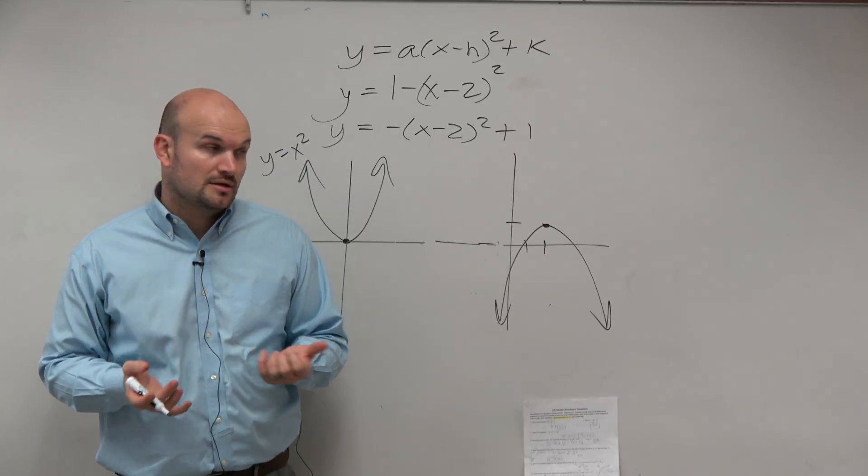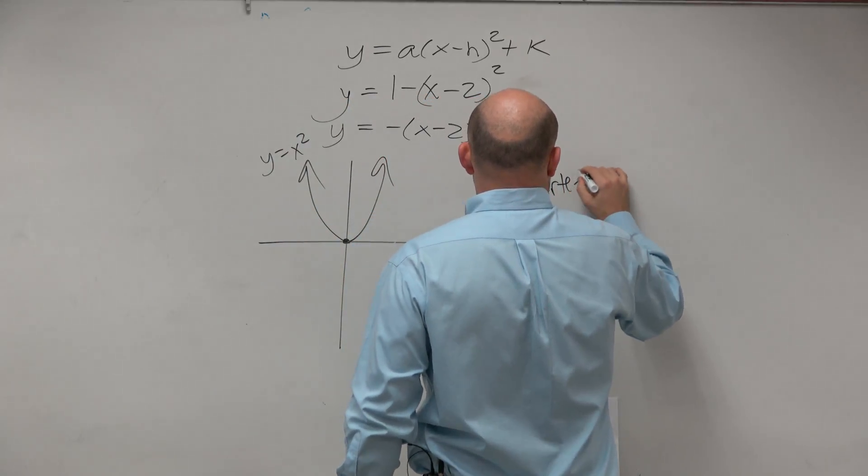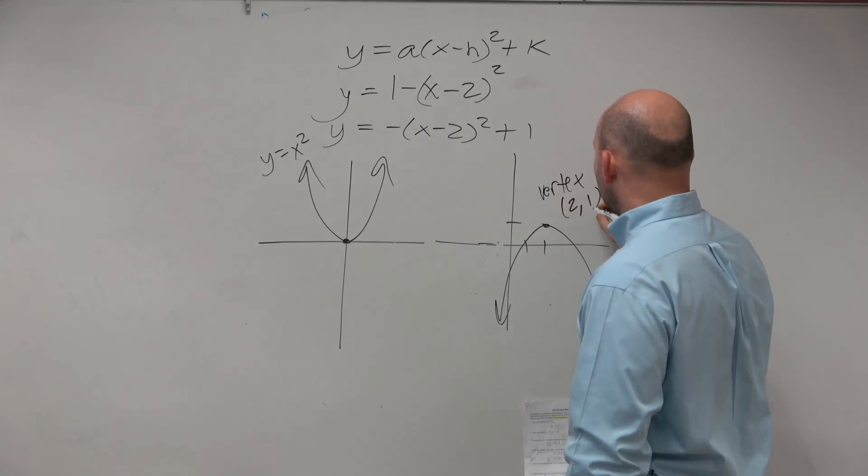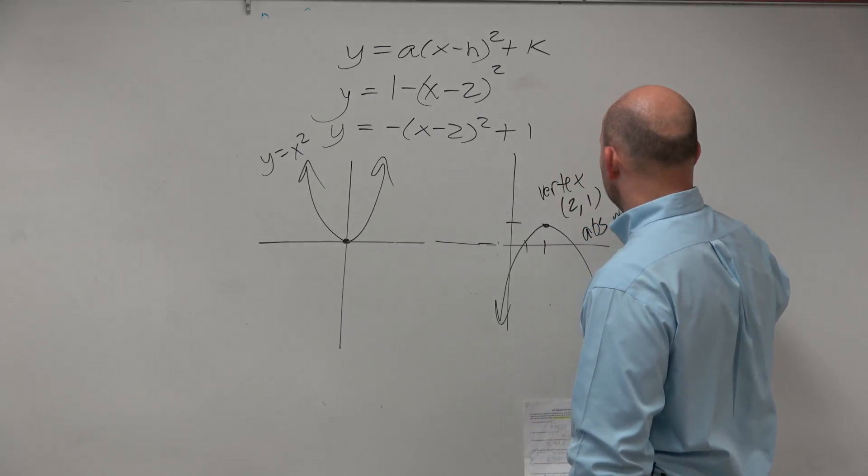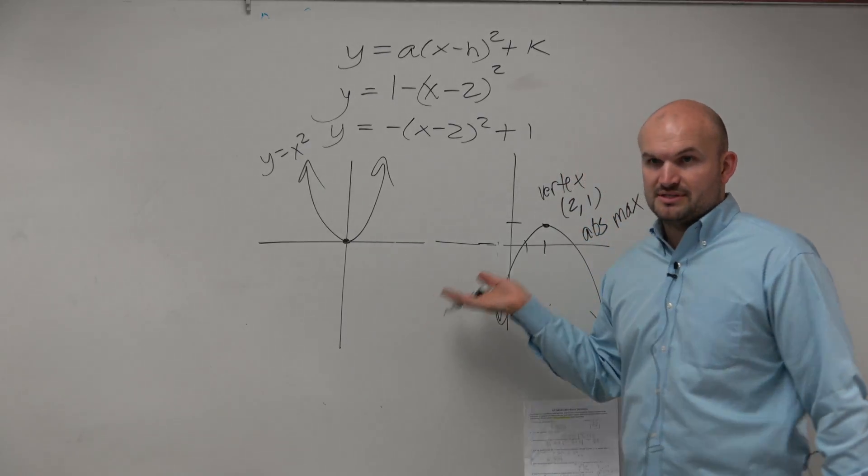Agreed? So my vertex is 2 comma 1, and it is an absolute max. Right? Because, yes?